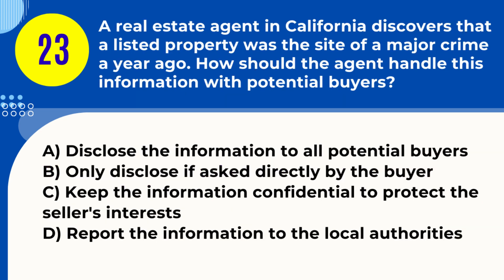Question 23. A real estate agent in California discovers that a listed property was the site of a major crime a year ago. How should the agent handle this information with potential buyers? A. Disclose the information to all potential buyers. B. Only disclose if asked directly by the buyer. C. Keep the information confidential to protect the seller's interests. D. Report the information to the local authorities. Answer: A. Disclose the information to all potential buyers. Explanation: In California, significant events like major crimes occurring on a property are material facts that must be disclosed to potential buyers.